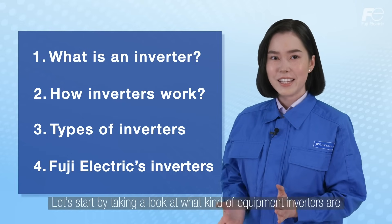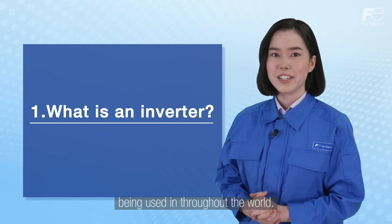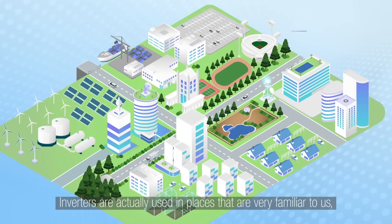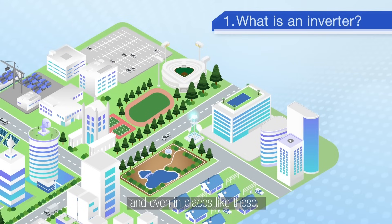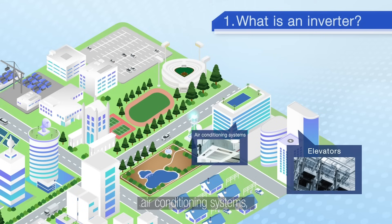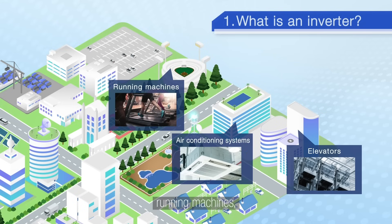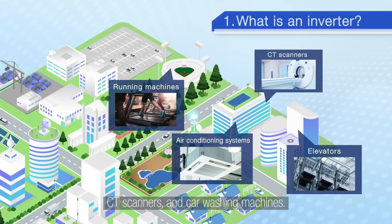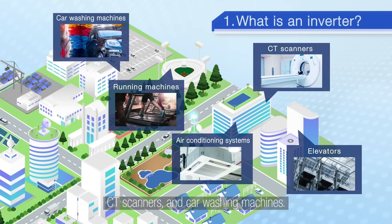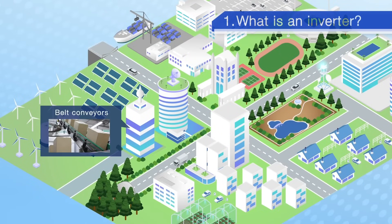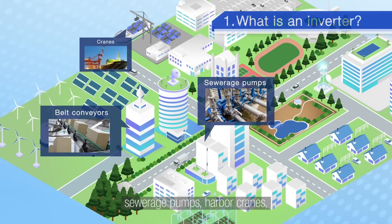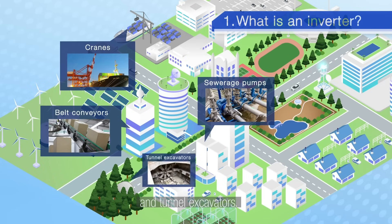Let's start by taking a look at what kind of equipment inverters are being used in throughout the world. Inverters are actually used in places that are very familiar to us. For example, they are used in elevators, air conditioning systems, running machines, CT scanners and car washing machines. Inverters are also installed in airport belt conveyors, sewage pumps, harbour cranes and tunnel excavators.